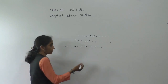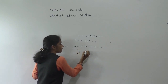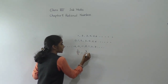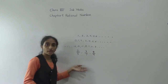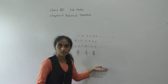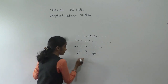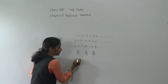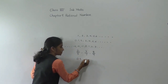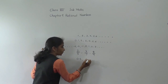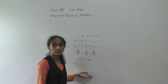Then after that, fractions. See: 2 upon 5, 3 upon 7, 8 upon 9 — these are the fractions. After that, decimals: 0.5, 0.20 — these are the decimal numbers.